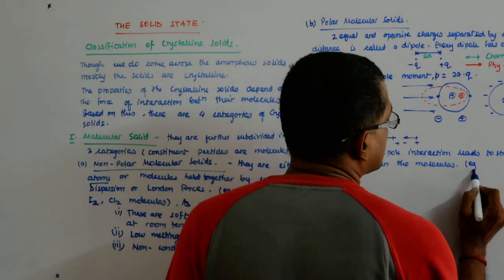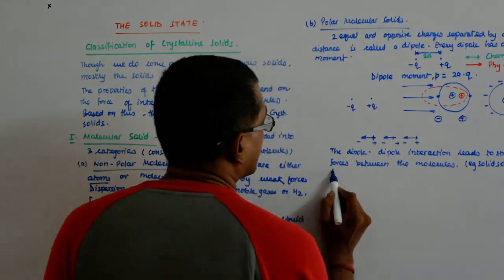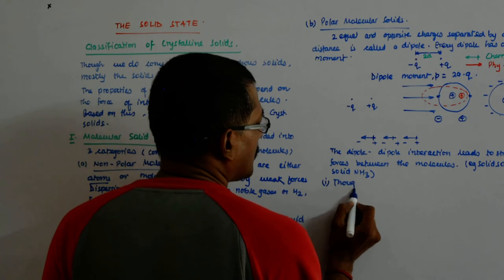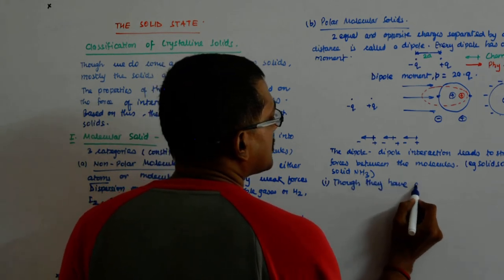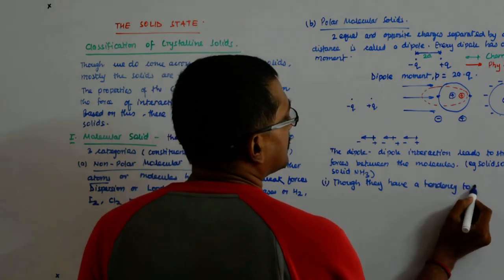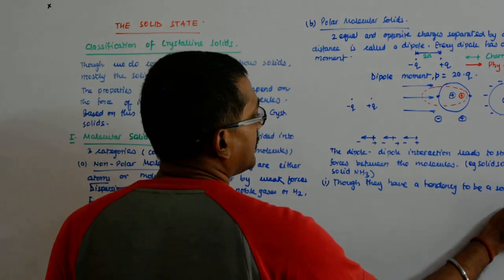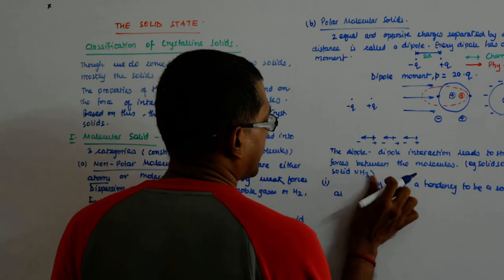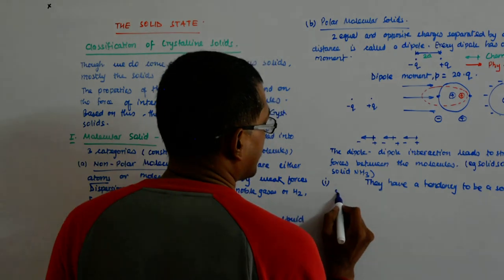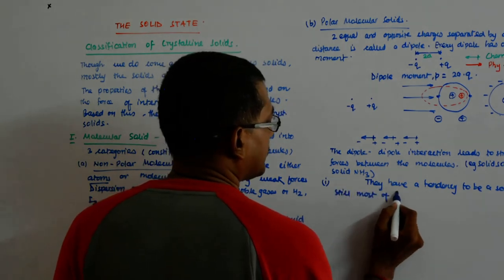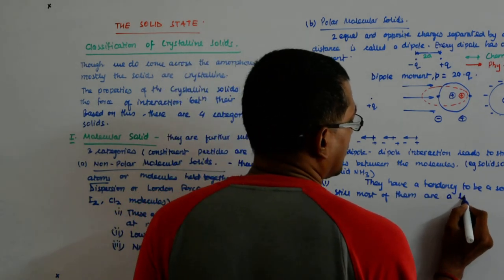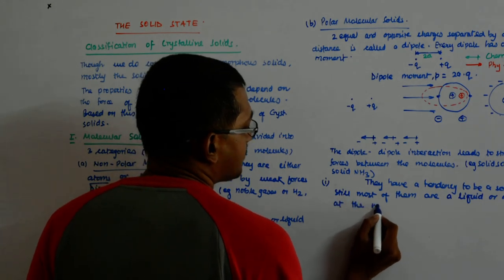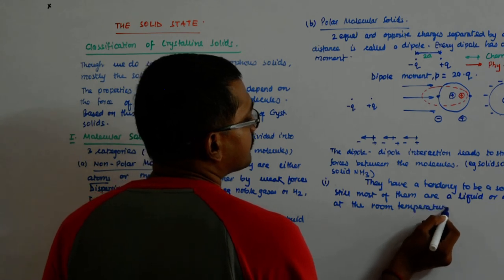For example, solid SO2 or solid NH3. Though they have a tendency to be a solid, still most of them are a liquid or a gas at room temperature.